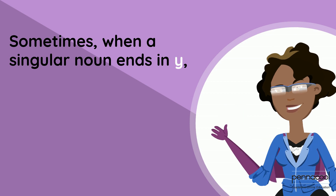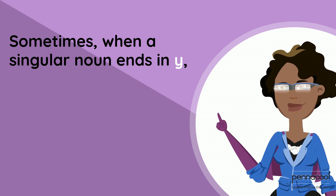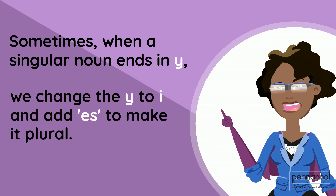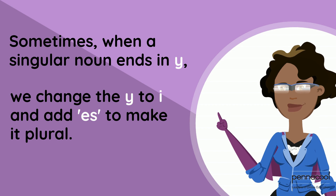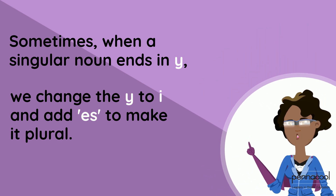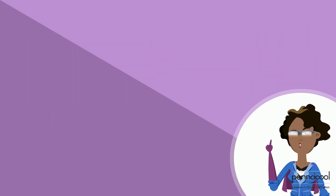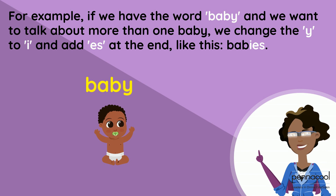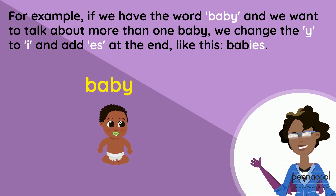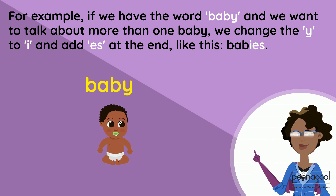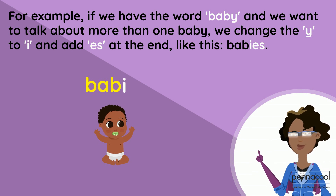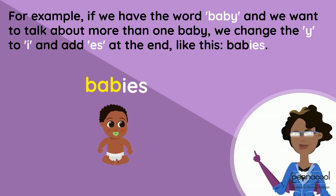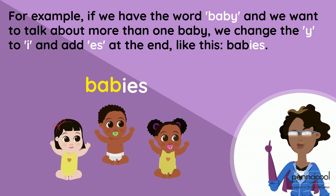Sometimes when a singular noun ends in Y, we change the Y to I and add ES to make it plural. For example, if we have the word baby and we want to talk about more than one baby, we change the Y to I and add ES at the end like this. Babies.